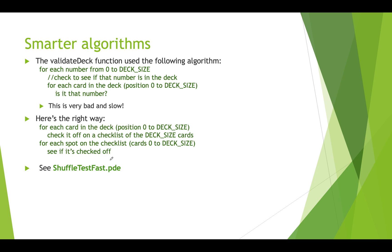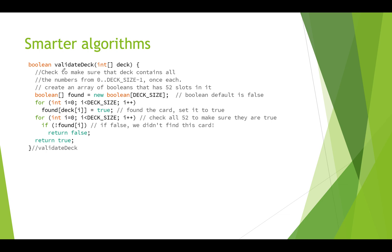This one is in shuffletestfast.pde. Here's that algorithm — validate deck. Again, we're passing in a deck. We create an array of boolean variables called 'found', and we make that array deck size. Remember that when you create an array of boolean variables, the default value of a boolean is false, so this is an array of deck size falses. Then we loop through our deck from zero to deck size, and we get the value out of deck, use that integer as an index into our found array, and set that to true.